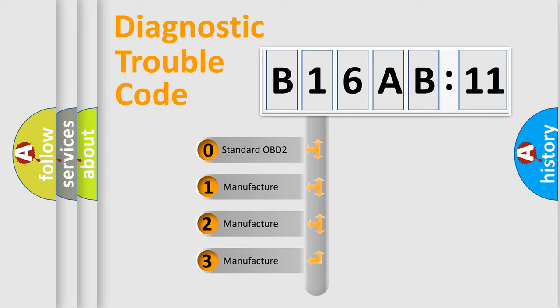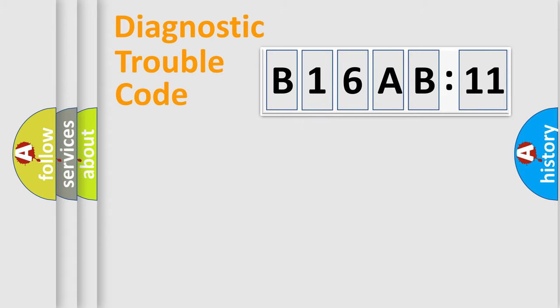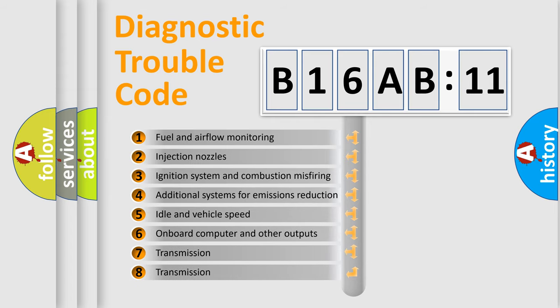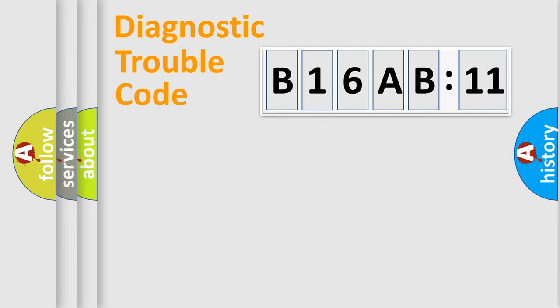If the second character is expressed as zero, it is a standardized error. In the case of numbers 1, 2, 3, it is a more manufacturer-specific expression of the car-specific error. The third character specifies a subset of errors. The distribution shown is valid only for the standardized DTC code. Only the last two characters define the specific fault of the group.